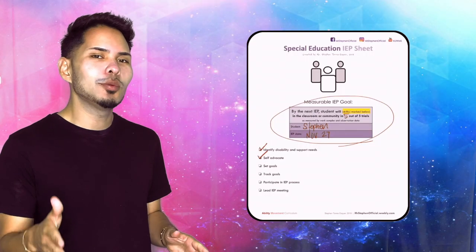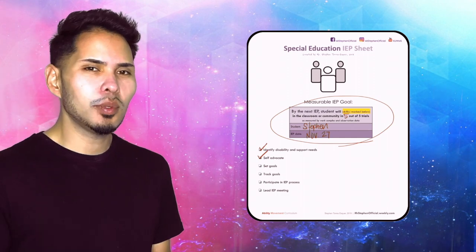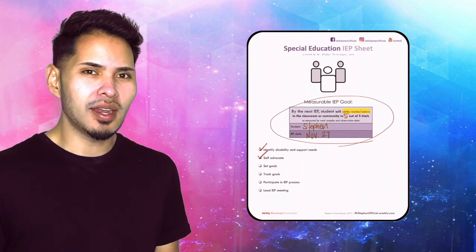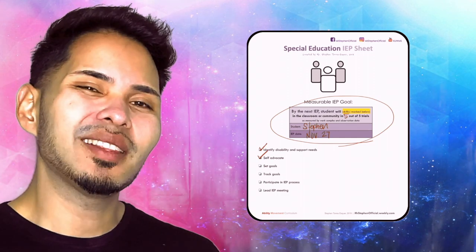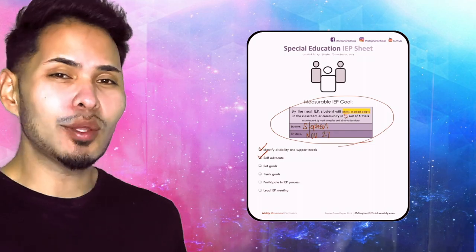Each course comes with an IEP goal sheet that has a sample IEP format, along with a checklist of some of the skills that are going to be used throughout the course. This way, you know that you will have work samples, data, and more to support you in managing the IEP.